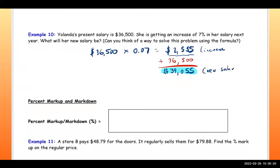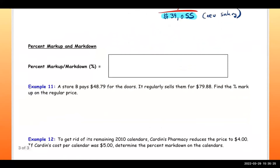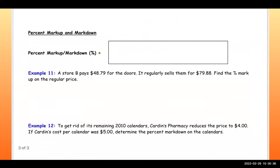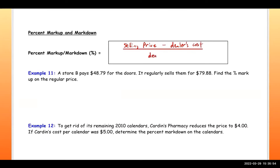Now they talk about percent markup and markdown. The formula is: (selling price of an object minus the dealer's cost) divided by the dealer's cost. Multiply by 100 to convert it to a percentage.